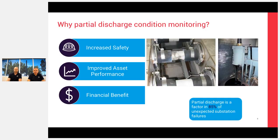Very briefly on condition monitoring and partial discharge: the reasons we do condition monitoring on our switchgear, cables, and HV assets are essentially threefold. We're looking to increase safety and prevent failures in the substation, improve asset performance by preventing outages and customer interruptions, and achieve a financial benefit by fixing assets before they fail — all three of those are very much interlinked.